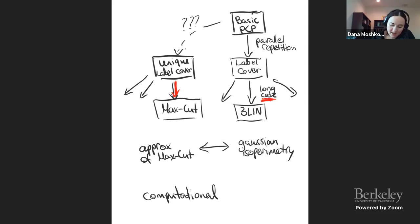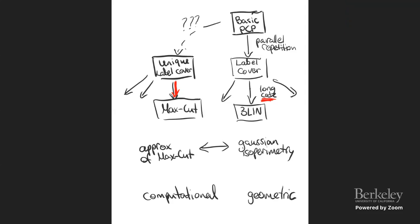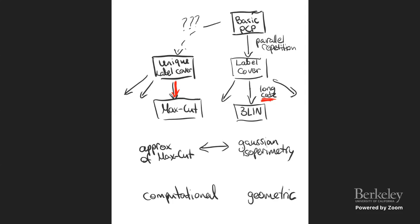Both the Goemans-Williamson algorithm — as an algorithm that uses Gaussian isoperimetry to partition vectors — and the hardness proof use Gaussian isoperimetry to prove optimality, which lives in the geometric world. Q: Are you claiming you can derive Gaussian isoperimetry from inapproximability of MaxCut? A: No — Gaussian isoperimetry gives us the best algorithm, and optimality of Gaussian isoperimetry gives us optimality of the approximation algorithm.